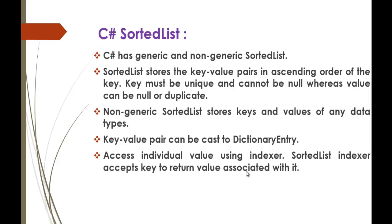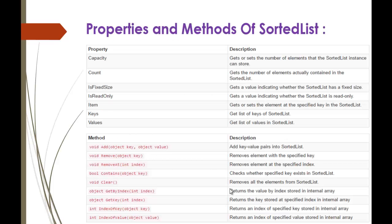To access an individual element, use the indexer: the sorted list indexer accepts a key to return the value associated with it. Now let's look at some properties and methods of sorted list. Suppose you want to remove an element from the sorted list.